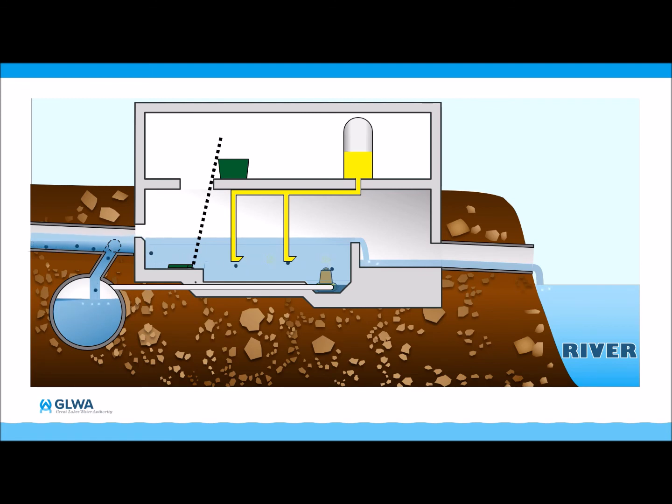Once the storm passes and the levels in the sewer and interceptor return to normal, the stored CSO, along with the solids that settled out in the basin, are pumped into the interceptor to flow to the water resource recovery facility for complete treatment.